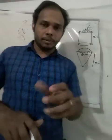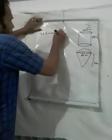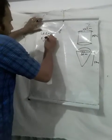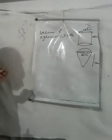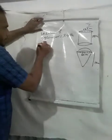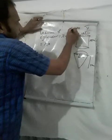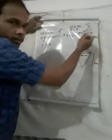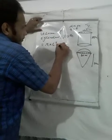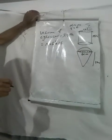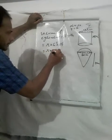Volume of cylinder equals π r² h. What is r and h? The diameter d equals 12, so r equals 6. Height h equals 15. Therefore volume of cylinder equals π into 6² into 15, which equals π into 36 into 15.